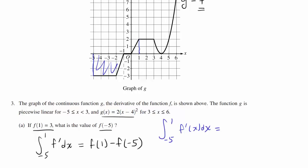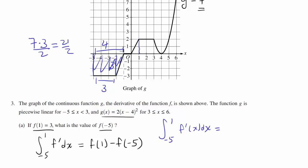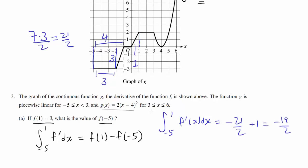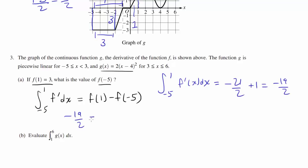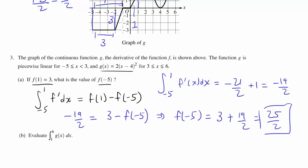The shaded part from negative 5 to negative 1 — we can use the trapezoid formula. The trapezoid has parallel sides of length 4 and 3, and height 3, giving 4 plus 3 times 3 over 2, or 21 over 2. And the triangle from negative 1 to 1 is simply 1 times 2 over 2, or 1. Since this region is below the x-axis, the integral is negative 21 over 2 plus 1, or negative 19 over 2. So negative 19 over 2 equals f of 1 minus f of negative 5, which gives f of negative 5 equals 3 plus 19 over 2, or 25 over 2.